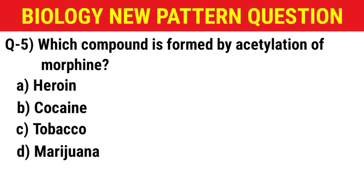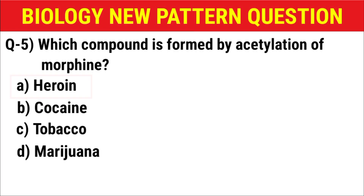Next question: The substance formed by acetylation of morphine is — (A) heroin, (B) cocaine, (C) tobacco, (D) marijuana. The correct answer is option A: heroin.